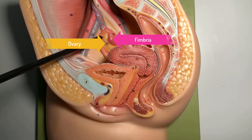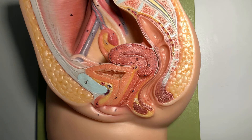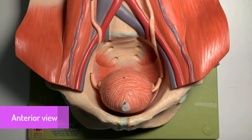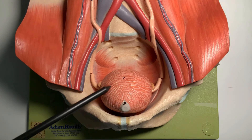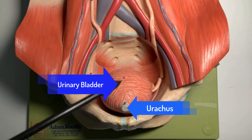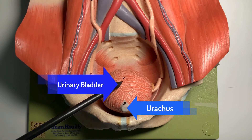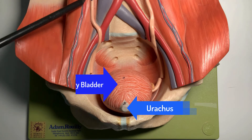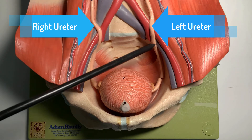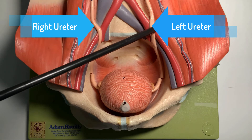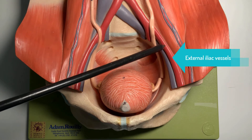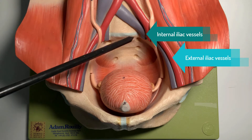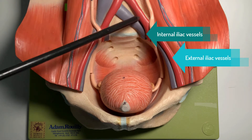These tubes here are the fallopian tubes, with the fimbria visible, and this is the ovary. Now on this model we can demonstrate the urinary bladder, with ureters visible on both the right and left sides.